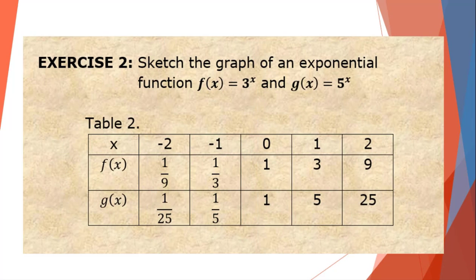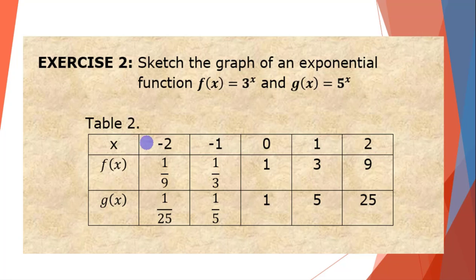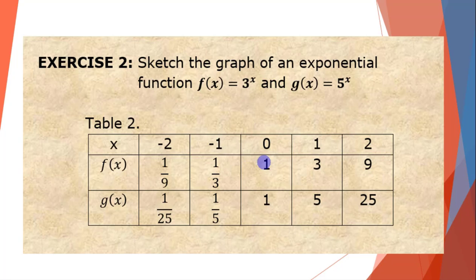For exercise number 2, we sketch the graphs of f(x) = 3 raised to x and g(x) = 5 raised to x. Let's discuss the table first. We assign values for x: −2, −1, 0, 1, 2. f(−2) = 1/3² = 1/9. f(−1) = 1/3. f(0) = 1. f(1) = 3.